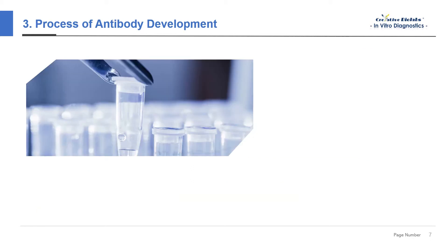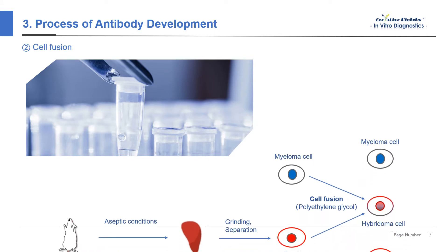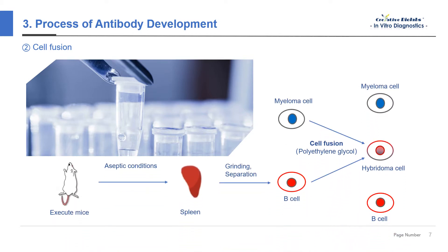The second step is cell fusion. After the mice were sacrificed, the spleens were removed under aseptic conditions and the B cells were isolated by grinding. Then, homologous myeloma cells and mouse spleen cells were mixed in a certain ratio, and polyethylene glycol was added to promote cell fusion. Under the action of polyethylene glycol, lymphocytes and myeloma cells are fused to form hybridoma cells.